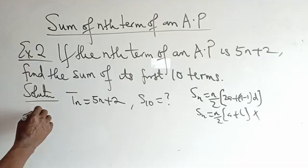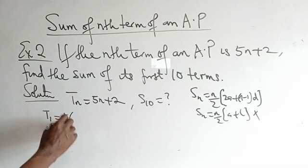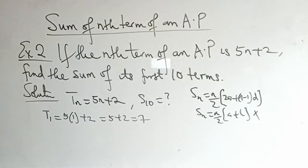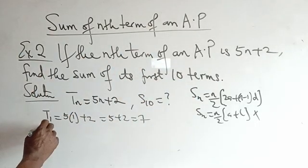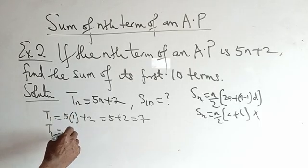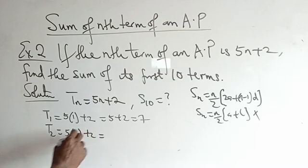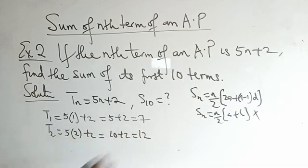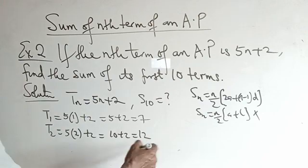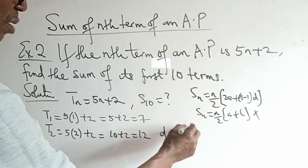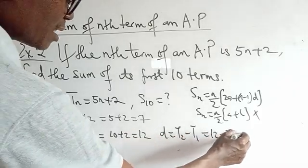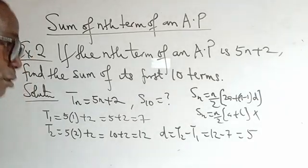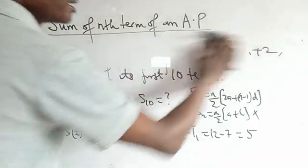So the first term: T1 = 5(1) + 2 = 5 + 2 = 7. To get the common difference, we find T2: T2 = 5(2) + 2 = 10 + 2 = 12. The common difference d = T2 − T1 = 12 − 7 = 5. Now we have all the parameters we need.